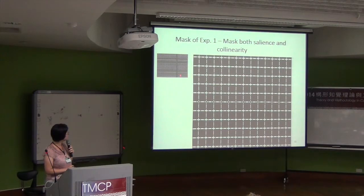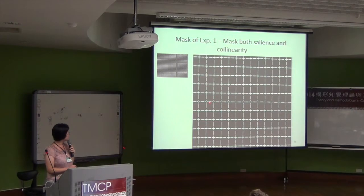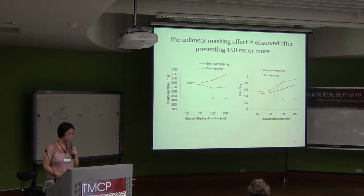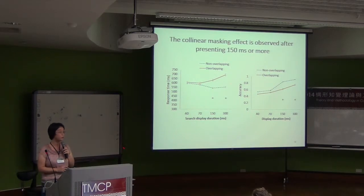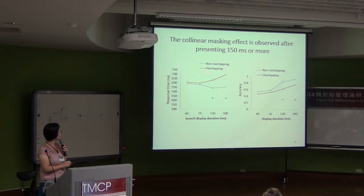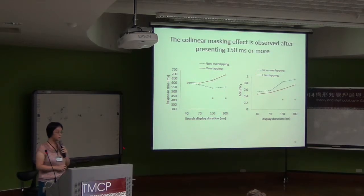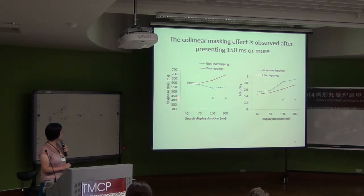We also masked the central target location to prevent any target advantage. The mask is designed to suppress both salience and collinearity. We found that the overlapping condition — where the target overlaps with the collinear distractor — is slower and less accurate than the non-overlapping condition. This difference is significant at the later time points: if the presentation duration is over 150 milliseconds, both reaction time and accuracy show a consistent result.